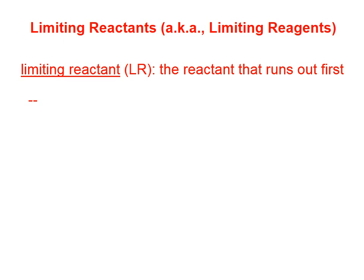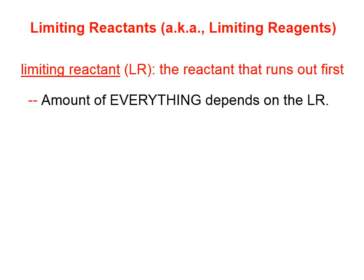In any reaction in the real world, almost always one of the reactants runs out before the other or others. And because a chemical reaction has to stop as soon as any of the reactants are used up, the amount of everything depends on the limiting reactant.